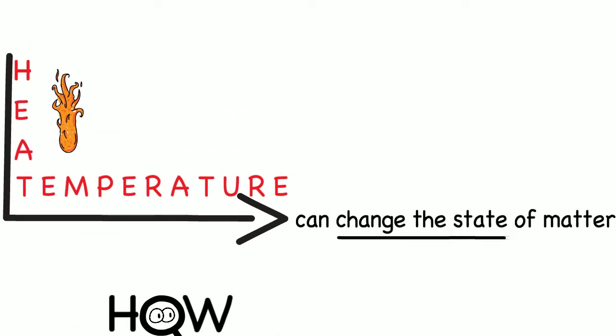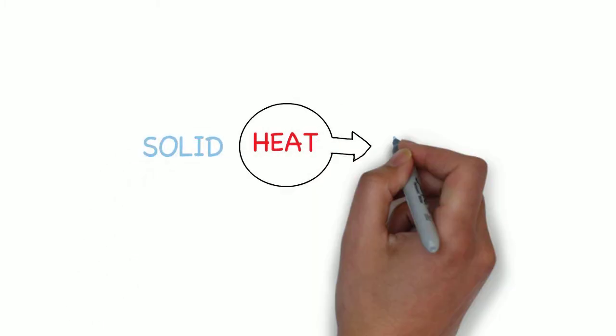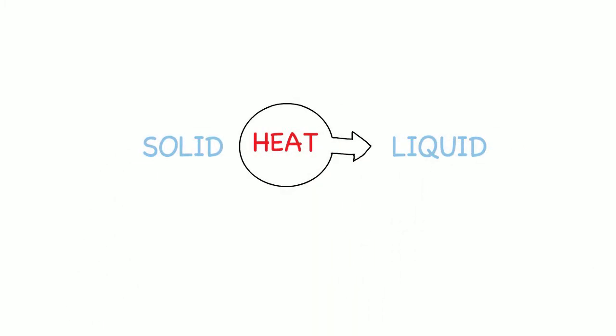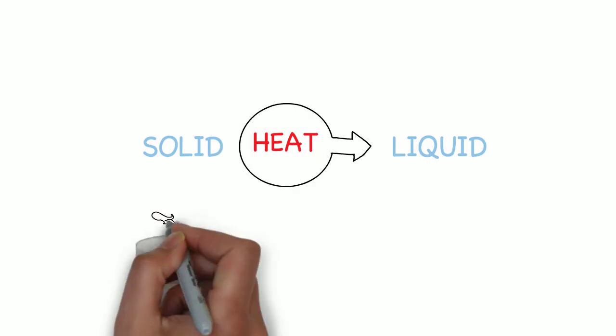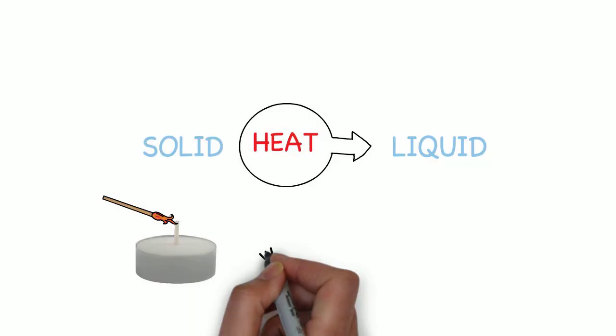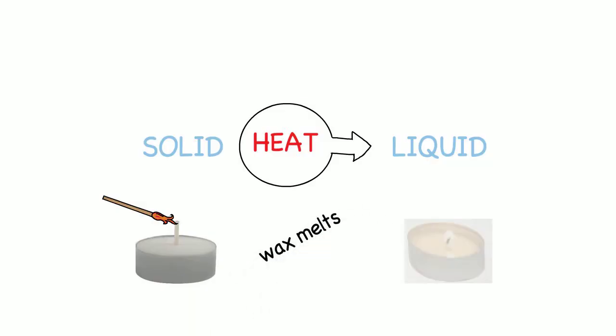Now we can go back to how heat can change the state of matter. For example, heat can change a solid into a liquid. Take a candle - it's solid, but if we light a match, the wax melts and becomes liquid.